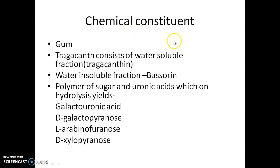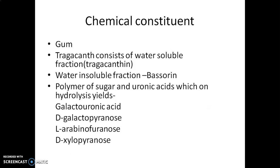Tragacanth is a gum, meaning it is a polymer of sugar and uronic acid. When dissolved in water, certain portions are soluble — this water-soluble fraction is known as tragacanthin. The water-insoluble fraction is known as bassorin. On hydrolysis by acids, it produces galacturonic acid, D-galactopyranose, L-arabinofuranose, and D-xylopyranose.